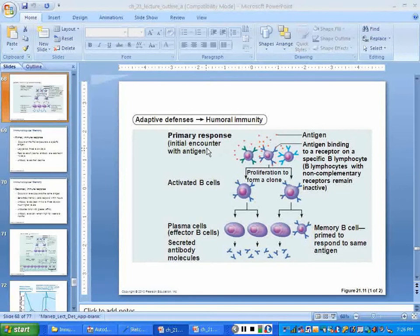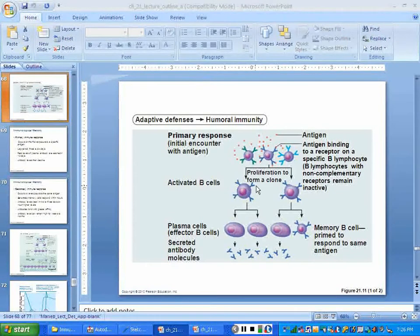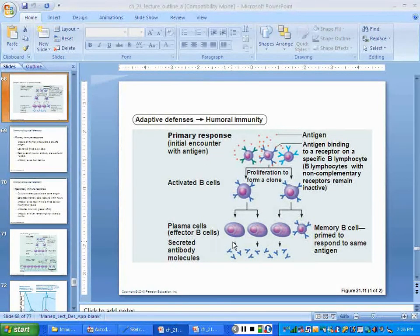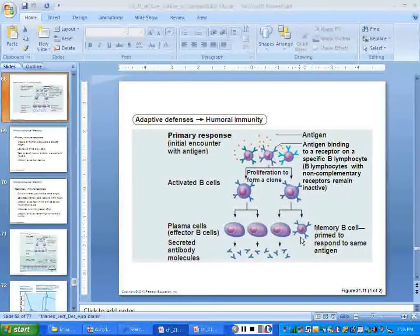Primary immune response. The first encounter with a new antigen. B cells get activated. They proliferate to form a clone. Some of those clones become plasma cells, and some of them become memory cells.